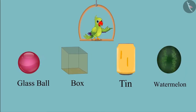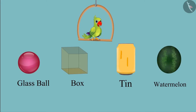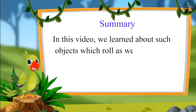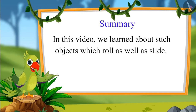So kids, you saw that some objects can slide and even roll, because some of their surfaces are round and some surfaces are not round. That was all for today. In this video, we learnt about such objects which roll as well as slide. I hope you have understood this topic very well. Bye, children.